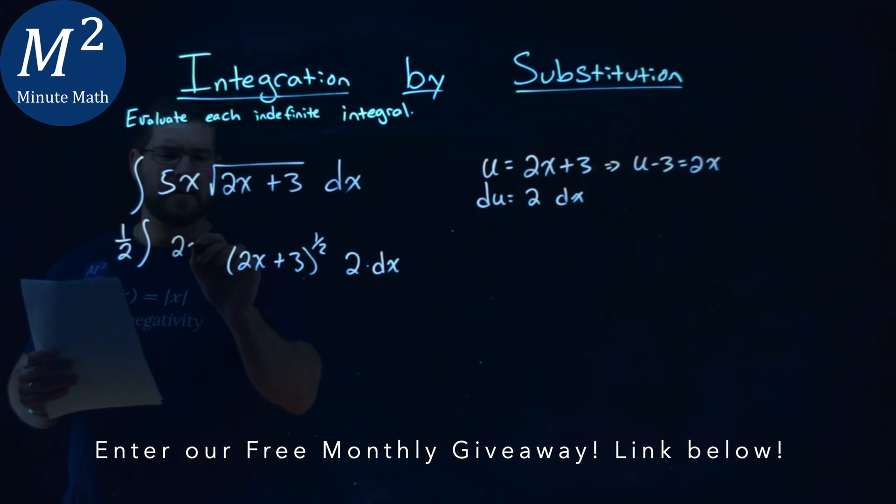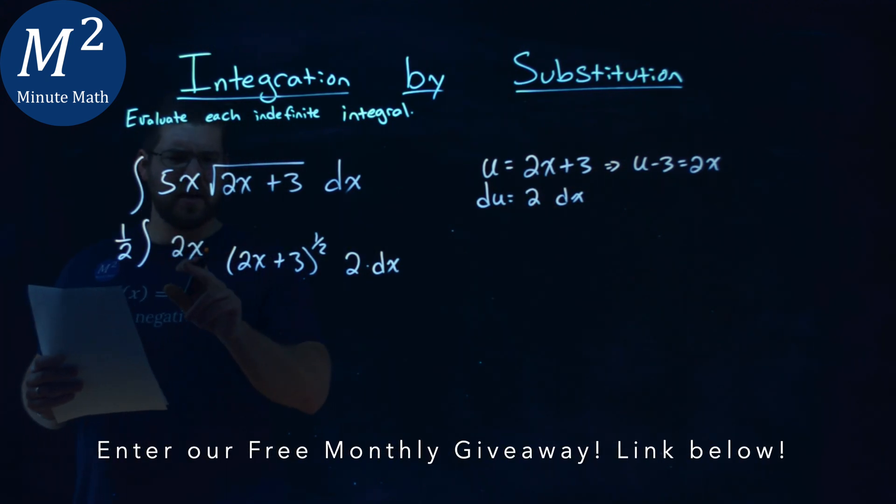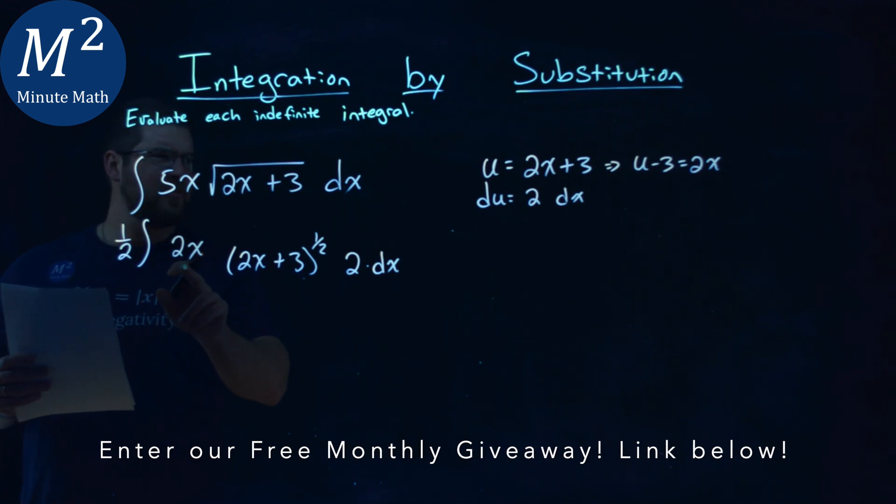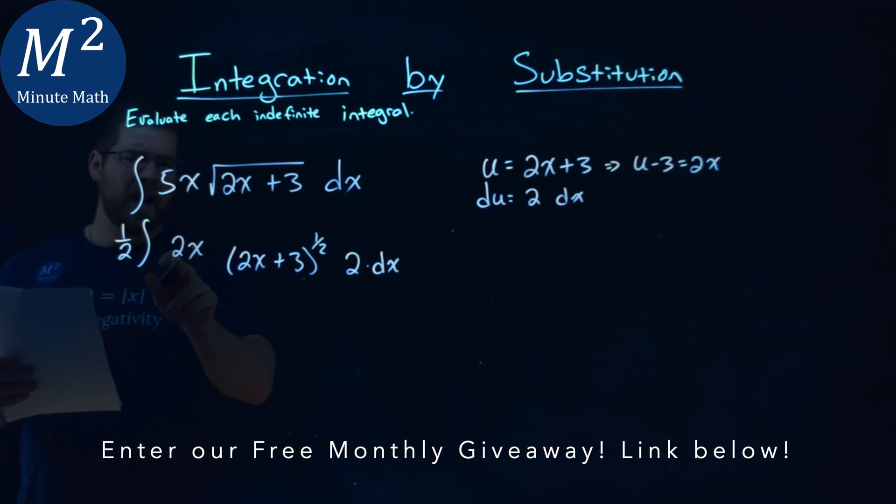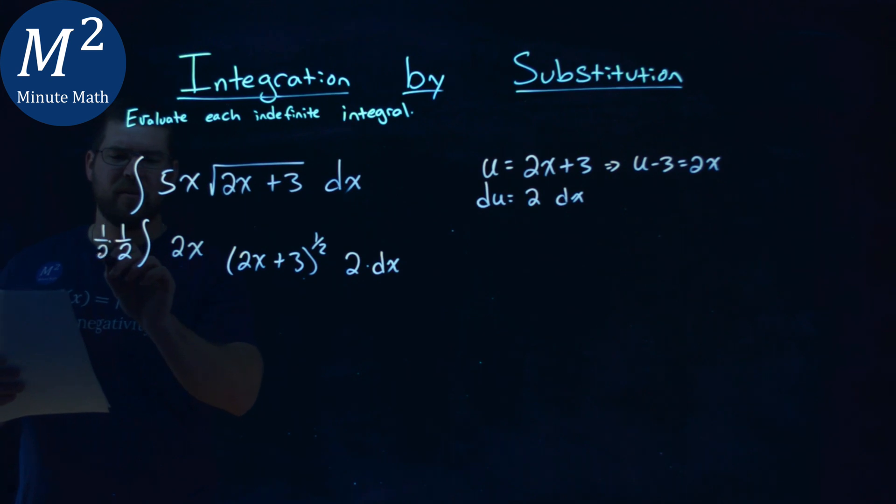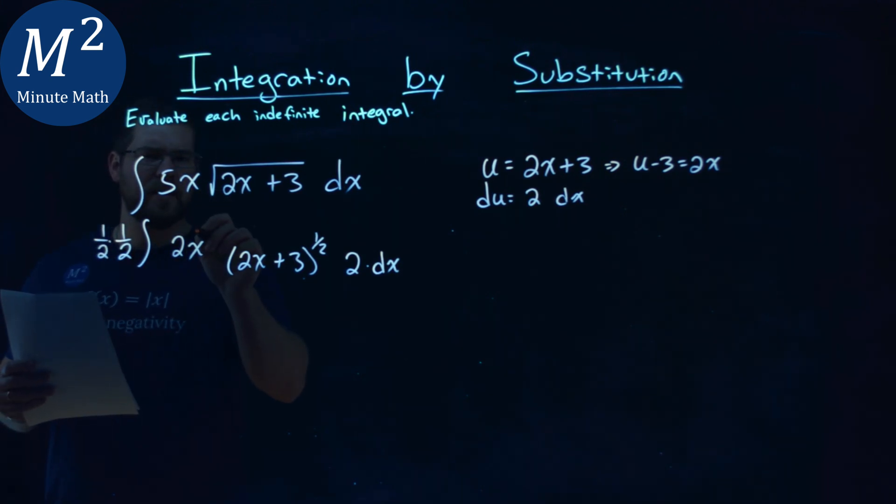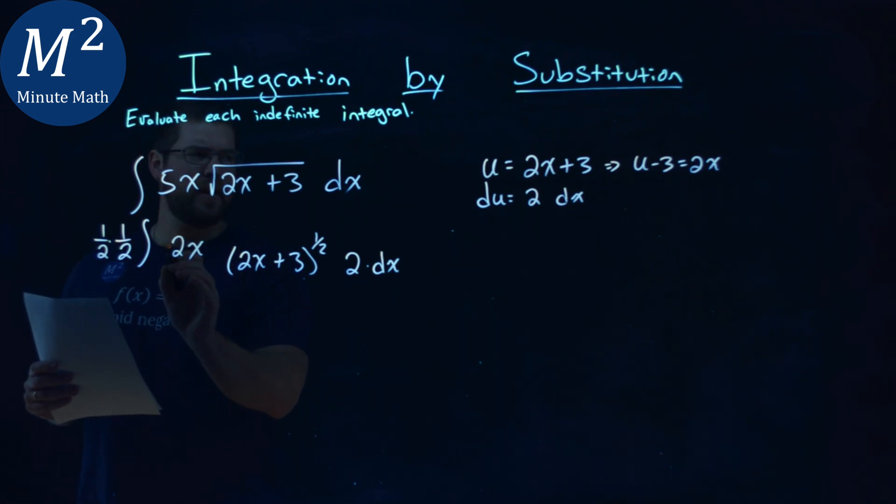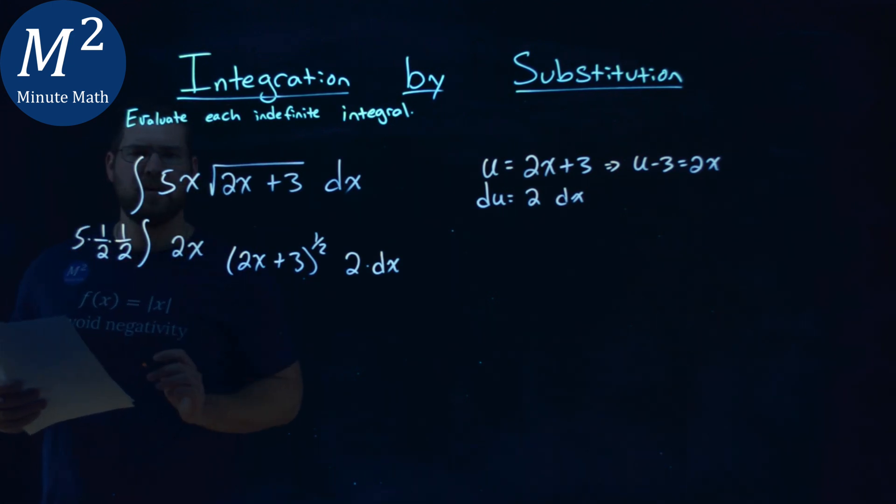But when I write that as a 2x, instead, what I have to do then is I have to put a 1 half again out front. So that cancels out there, and I still have the x value come down directly, but the 5 still should be there. But can I just put the 5 out front as well? Well, I can.